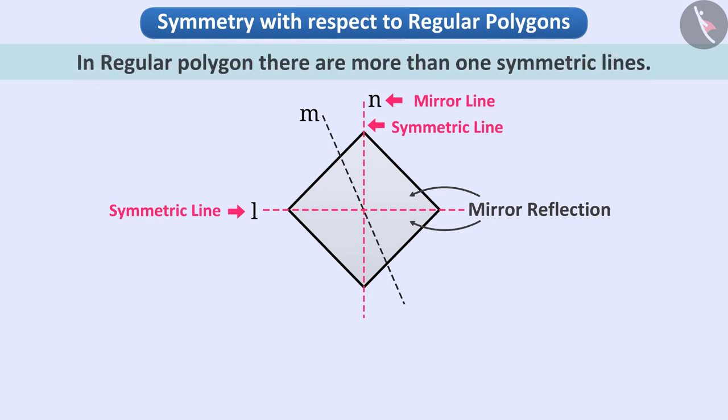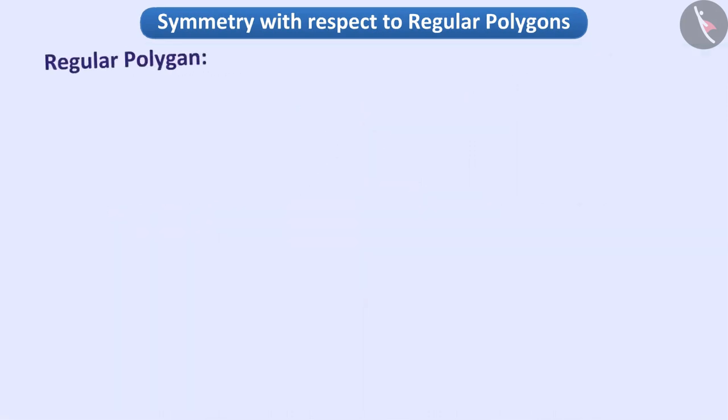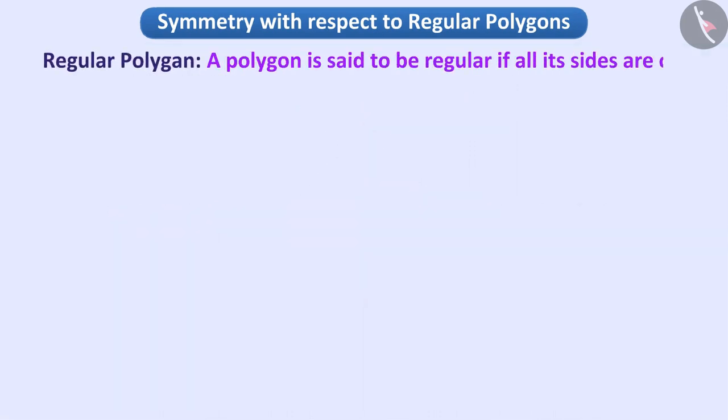Especially, when we talk about regular polygons, we can see more than one symmetric line in them. A regular polygon is said to be regular if all its sides are of equal length and all its angles are of equal measure.